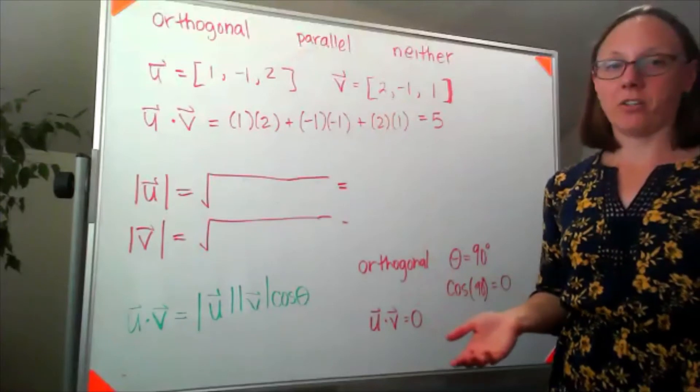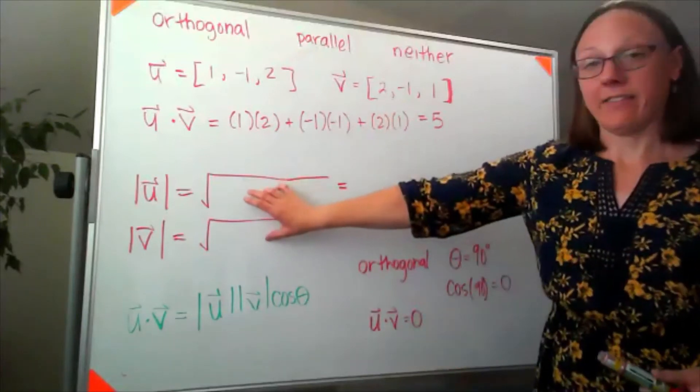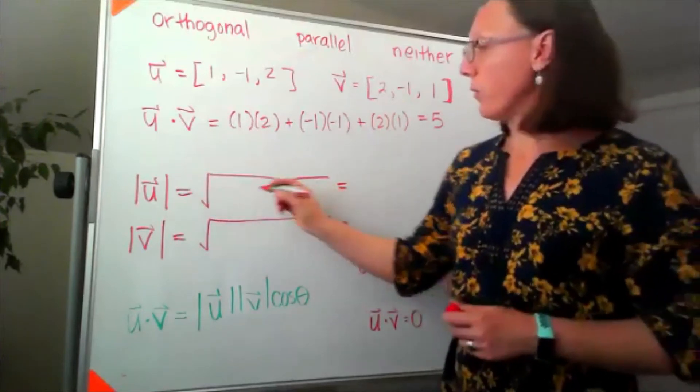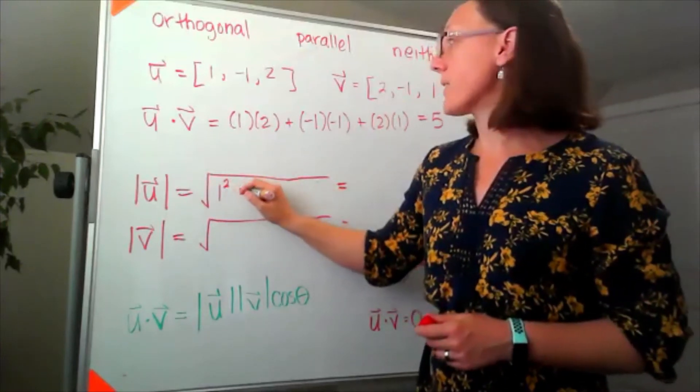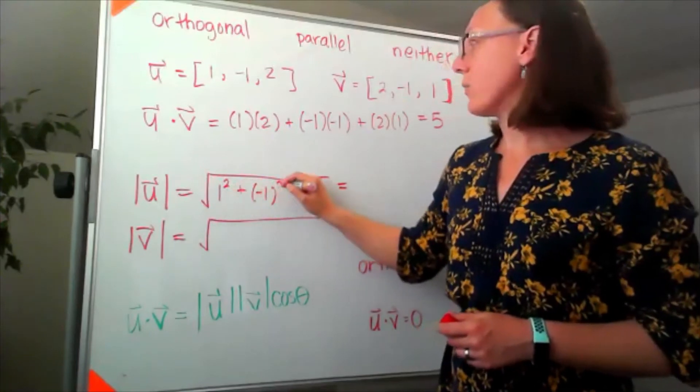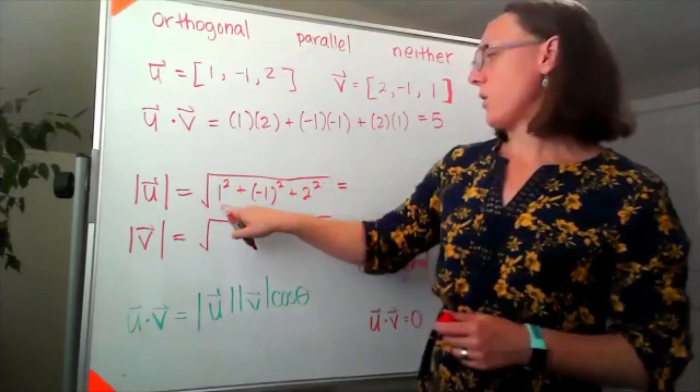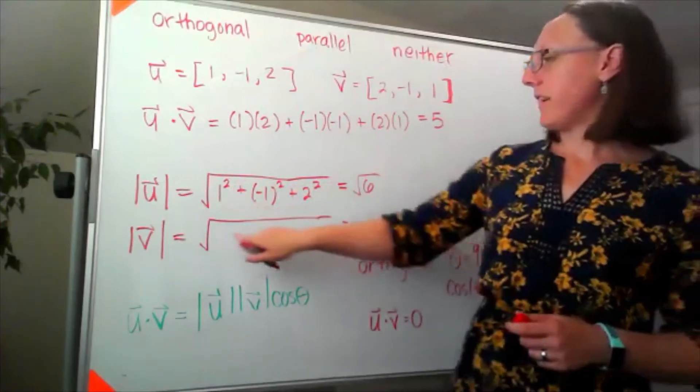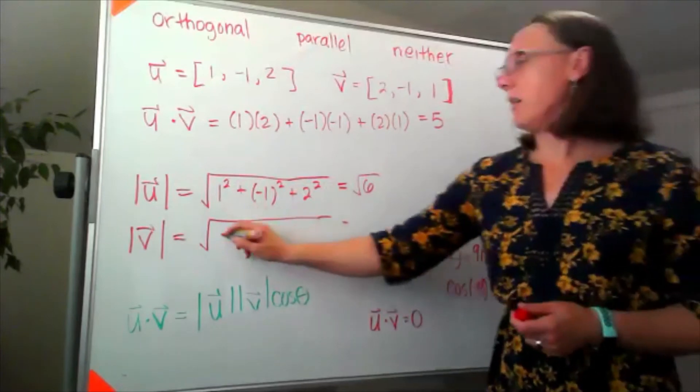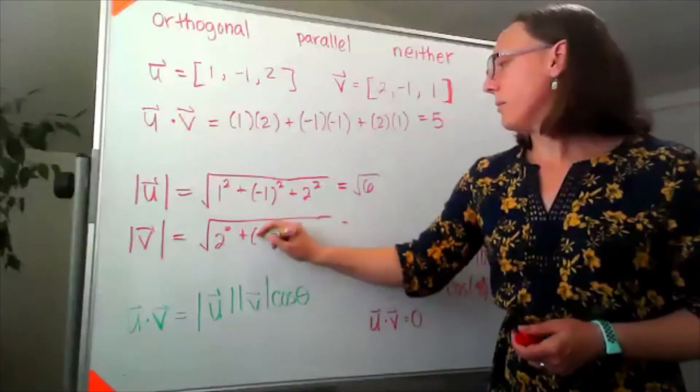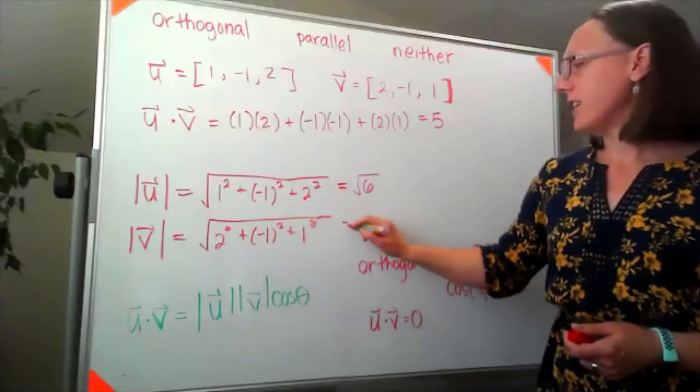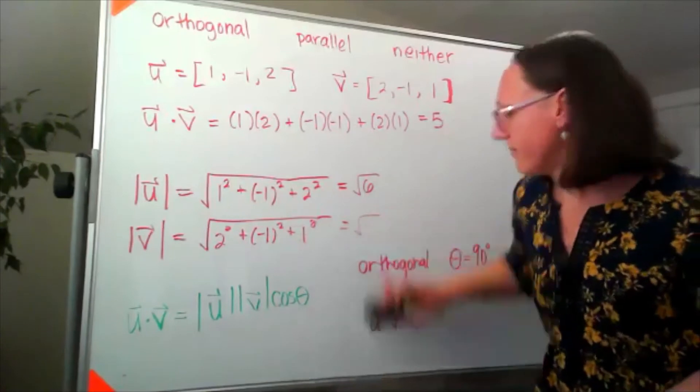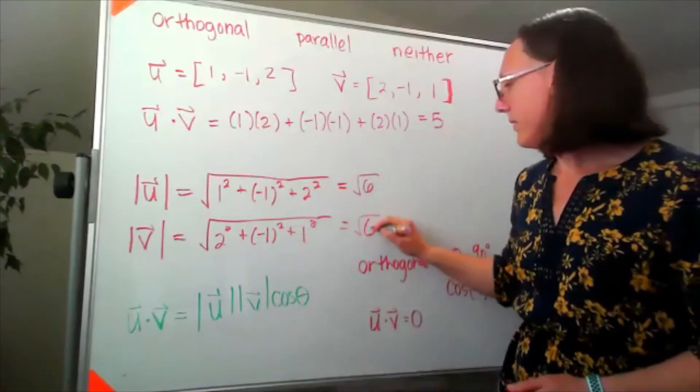It still could be parallel, and to figure that out we need to come in and look at what's happening with our magnitudes. So for u my magnitude would be 1 squared plus negative 1 squared plus 2 squared. So that's 1 plus 1 plus 4, so that's the square root of 6. I come in to take my magnitude of v, that's 2 squared plus negative 1 squared plus 1 squared, so that's also a magnitude of 6.